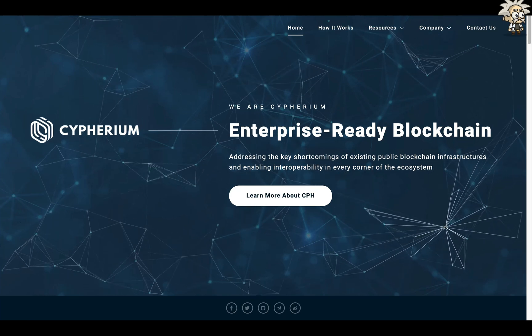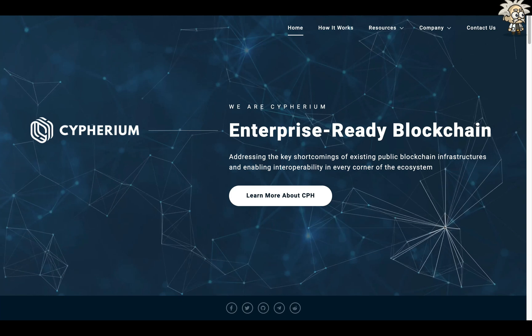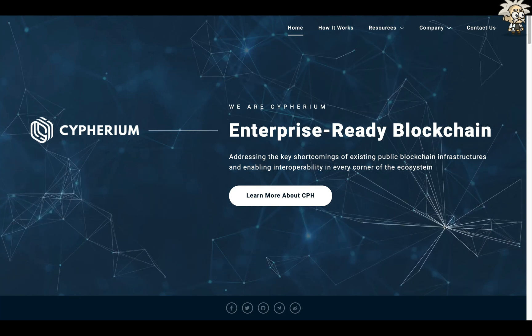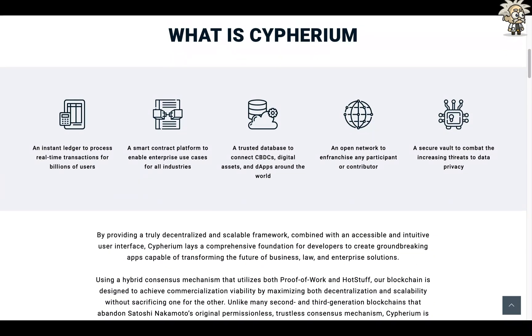Their native token is the CPH token and they are having their token sale currently going on right now. Cypherium's unique consensus mechanism provides unprecedented transaction throughput and contract execution time through PBFT while leveraging an ASIC-resistant proof of work system for decentralized node election.